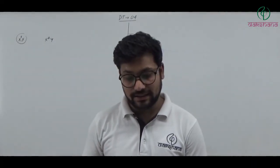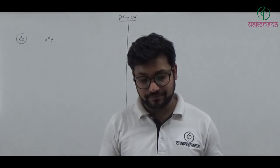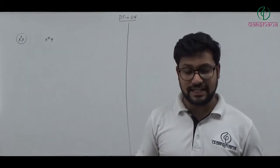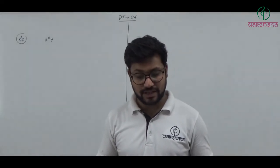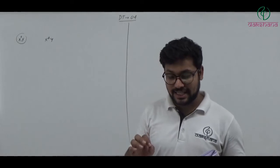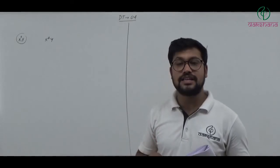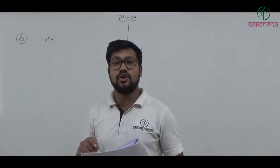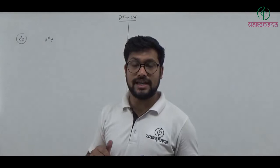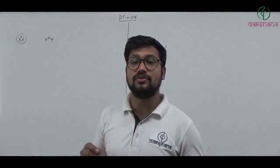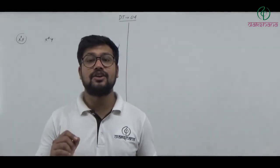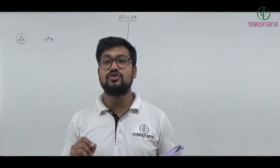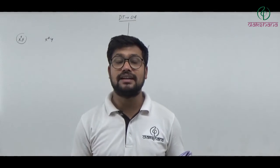Question number forty-seven: ABO inheritance shows what? ABO blood grouping demonstrates co-dominance. So question number forty-seven's first option — co-dominance — is the right answer.